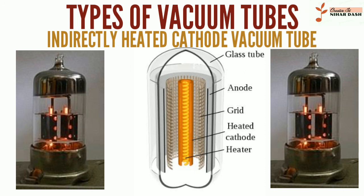Indirectly heated cathodes enable the cathode circuit to be separated from the heater circuit. The filament, no longer electrically connected to the tube's electrodes, became simply known as a heater, and could be powered by AC without any introduction of hum. In the 1930s, indirectly heated cathode tubes became widespread in equipment using AC power. Directly heated cathode tubes continued to be widely used in battery-powered equipment, as their filaments required considerably less power. Tubes designed for high-gain audio applications may have twisted heater wires to cancel out stray electric fields that could induce objectionable hum. Heaters may be energized with either AC or DC; DC is often used where low hum is required.